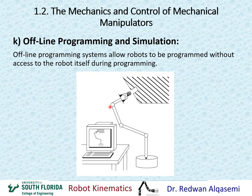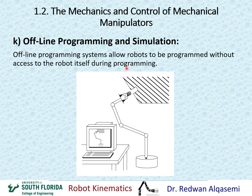Offline programming and simulation: sometimes you need to do programming offline without connecting to or having access to the robot. You verify your code and programs through simulation, and once everything checks out theoretically through simulation, you can then connect your program to the robot and run it. This is called offline programming, and most people use it to develop, debug, and test programs so that no harm comes to the robot or people around it.